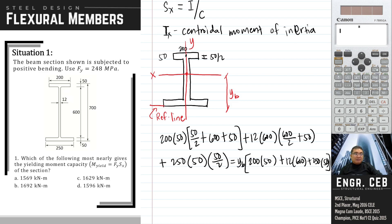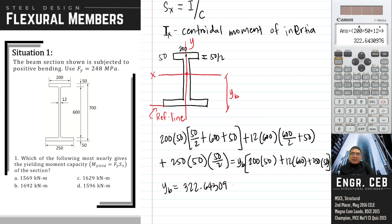Solving gives y_b equals 322.643 mm. We now know the location of the centroid, so we can compute the moment of inertia with respect to the centroid.